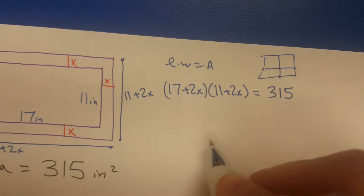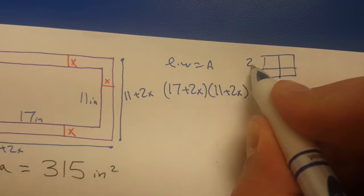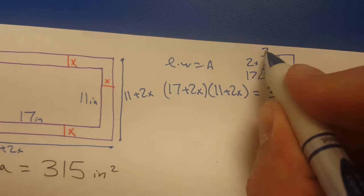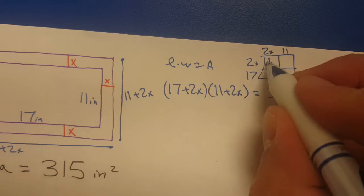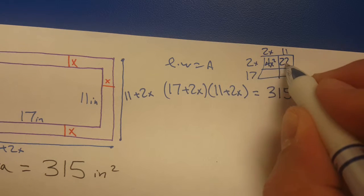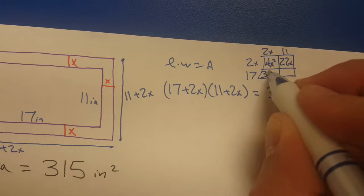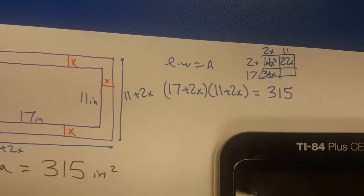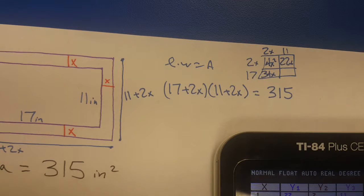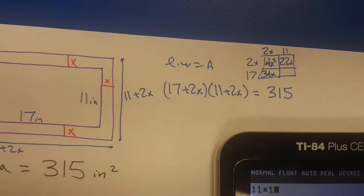I'm going to rewrite it as 2x and 17 times the 2x and 11. We're going to have 4x squared, 22x, that's going to be 34x, and then 11 times 17, I believe is 187. Let me double check. 11 times 17, yep, 187.